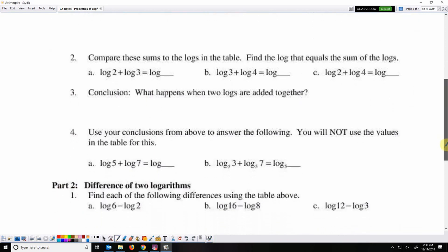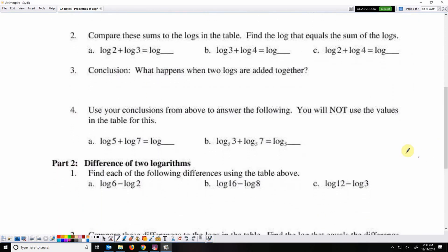We'll answer a few things along the way here until we get toward the bottom of the second page. So log 5, that's a base 10, and log 7, another base 10 added together, is the same as log base 10, which is common log, 5 times 7, which is 35.